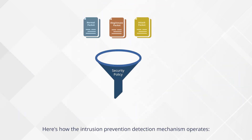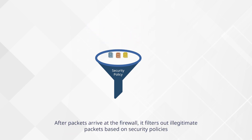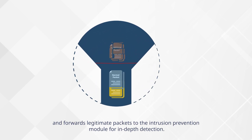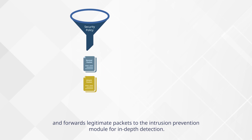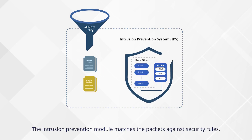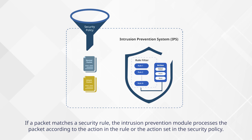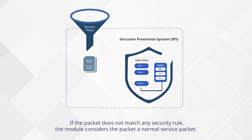Here's how the intrusion prevention detection mechanism operates. After packets arrive at the firewall, it filters out illegitimate packets based on security policies and forwards legitimate packets to the intrusion prevention module for in-depth detection. The intrusion prevention module matches the packets against security rules. If a packet matches a security rule, the module processes the packet according to the action in the rule or the action set in the security policy. If the packet does not match any security rule, the module considers the packet a normal service packet.